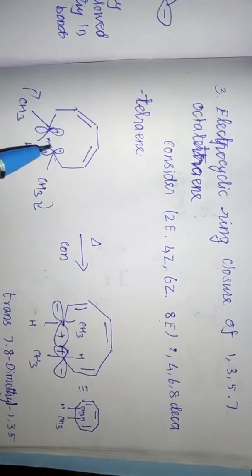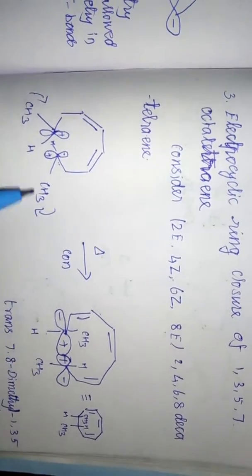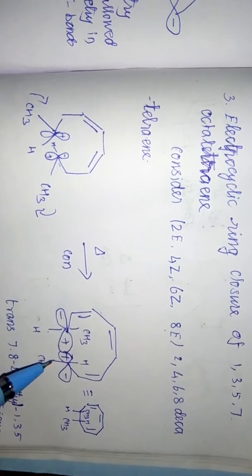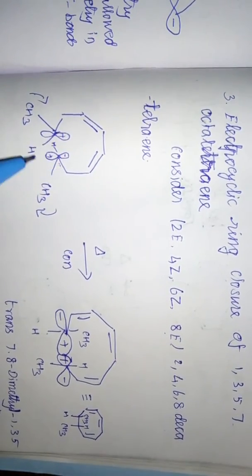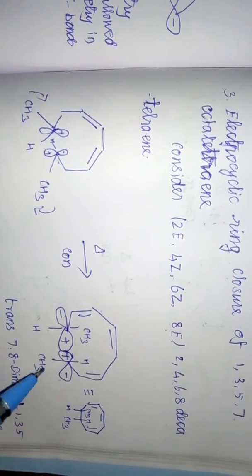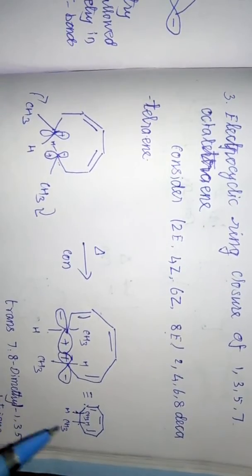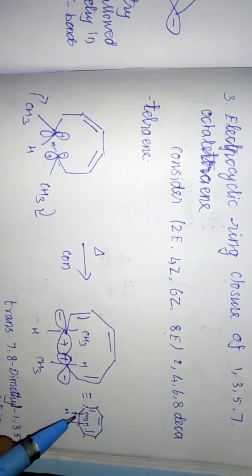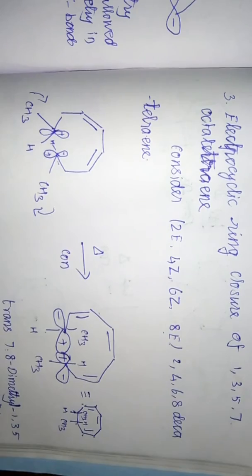In conrotation, if one carbon rotates clockwise the other also rotates clockwise to form a sigma bond. This maintains C2 symmetry. The methyl group and hydrogen both go up on one carbon, giving a trans conformation. The product is the triene with one extra sigma bond — trans-7,8-dimethyl-1,3,5-cyclooctatriene.